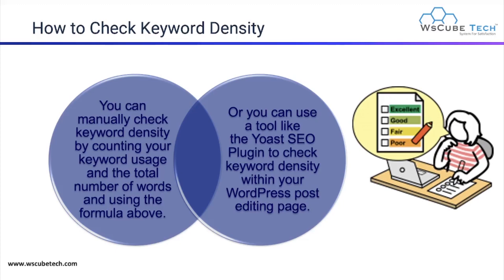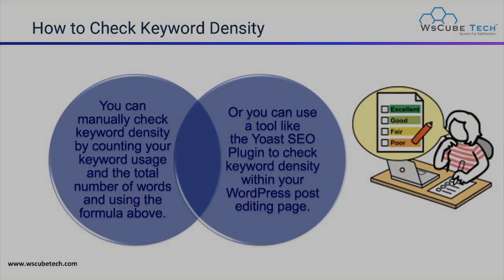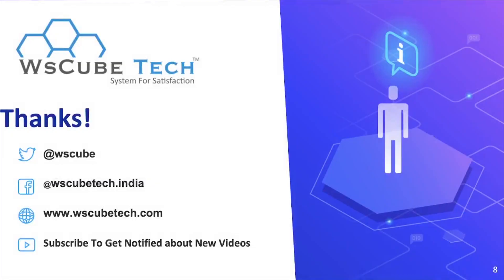If your website is on WordPress, you have a tool called the Yoast SEO plugin. In the Yoast SEO plugin, you can check your keyword density on the WordPress post editing page. When you go to your post writing page, you can find the keyword density option. If your keyword density is too high, there will be a red mark indicating you need to work on it. This is all about keyword density and keyword stuffing. Thank you for watching.